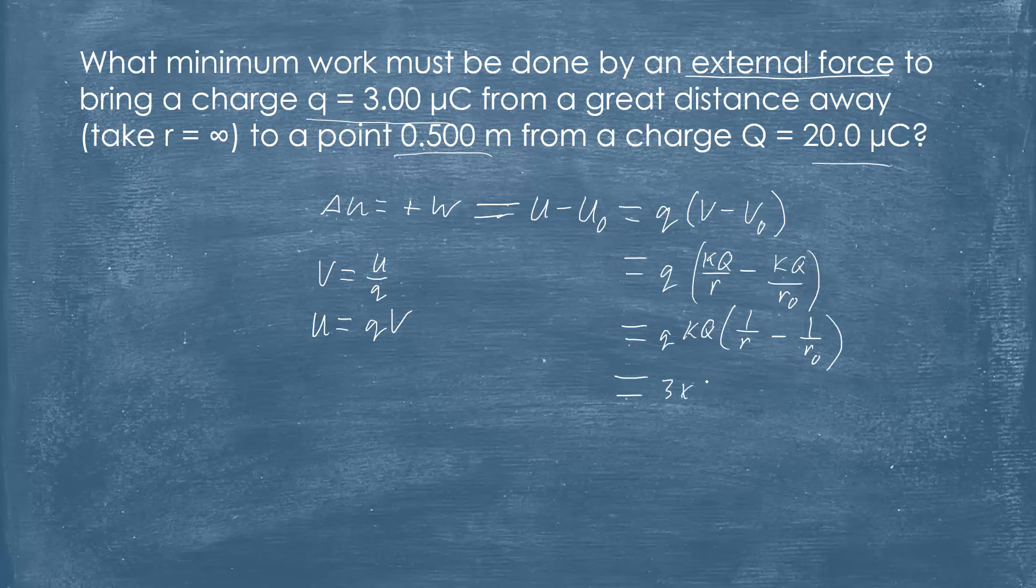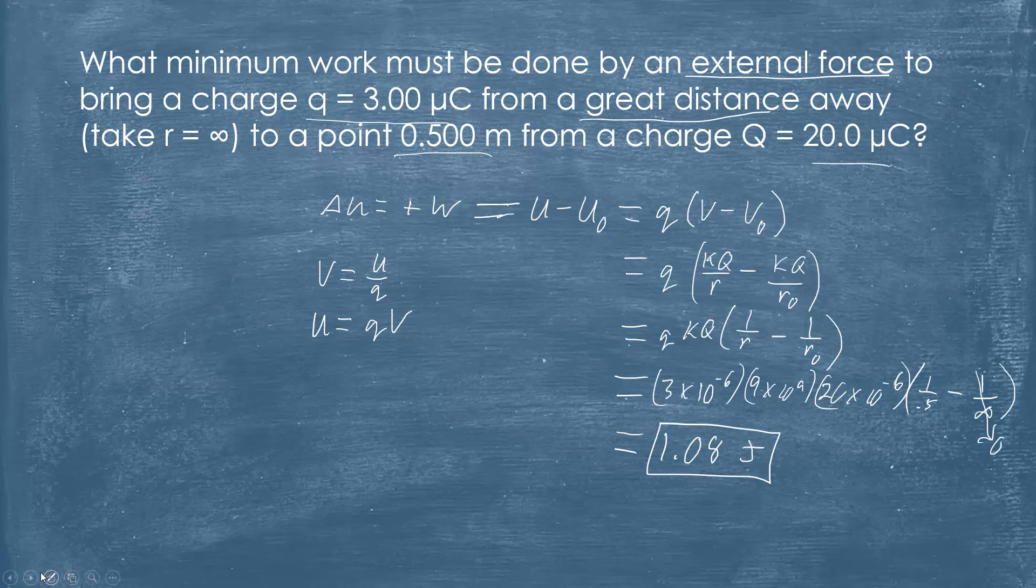Okay, we can go ahead and factor out the K and Q, so we have Q K Q, 1 over R minus 1 over R naught, and at this point we can just go ahead and plug in stuff and get an answer. So this is 3×10⁻⁶, K is 9×10⁹, the other Q is 20×10⁻⁶, and then these R's, the R final is where we end up, so that is the half meter. Our initial great distance away is another way of saying infinitely far away, so we divide by infinity and that goes to zero. So we just multiply out the rest of this stuff and we get a measly little 1.08 joules to bring those two charges together.